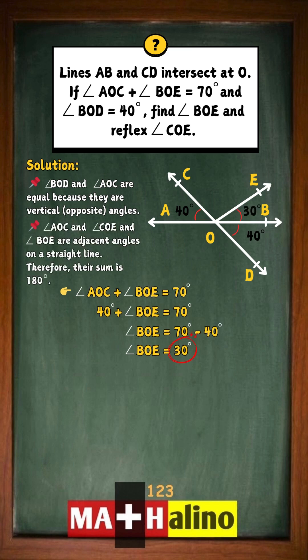Angles AOC, BOE, and COE lie on a straight line. That means their sum is 180 degrees.